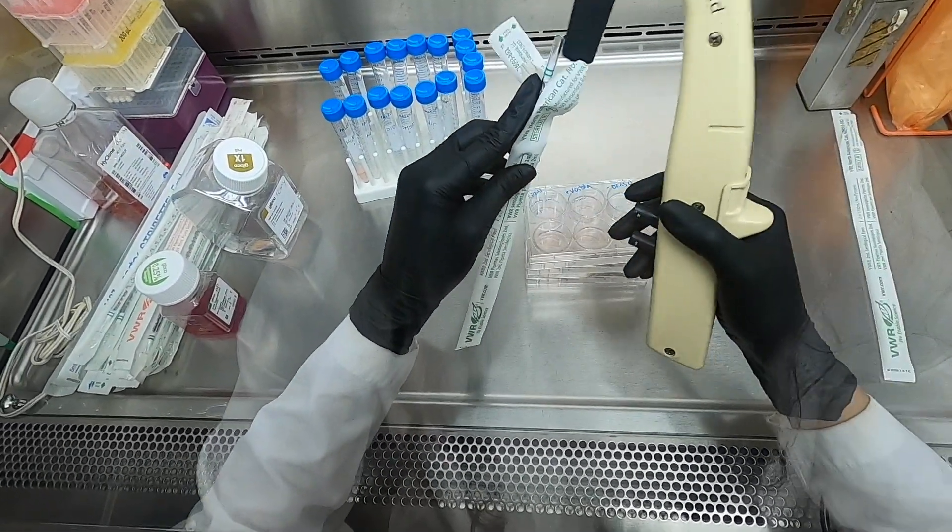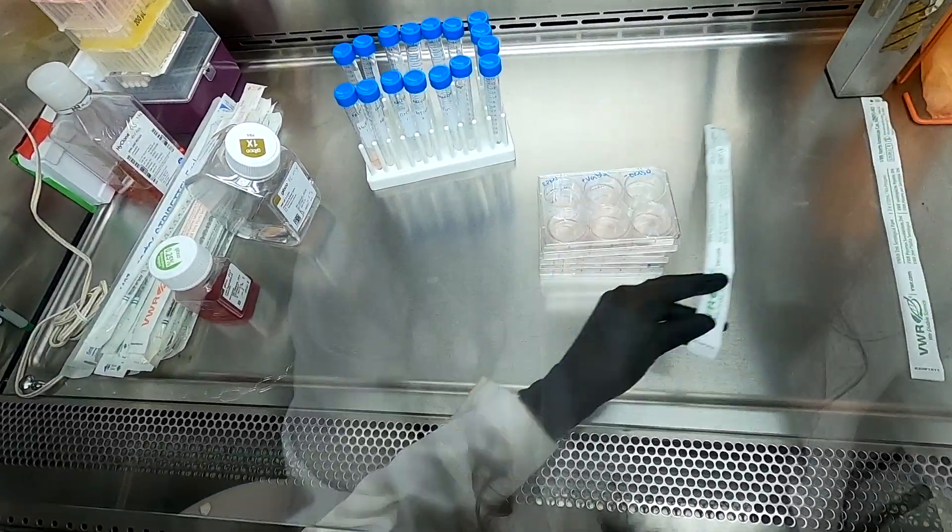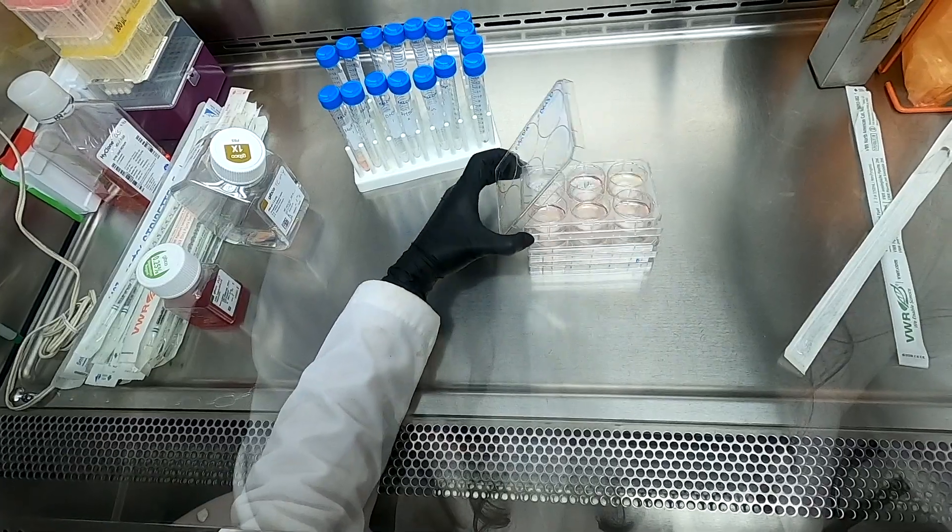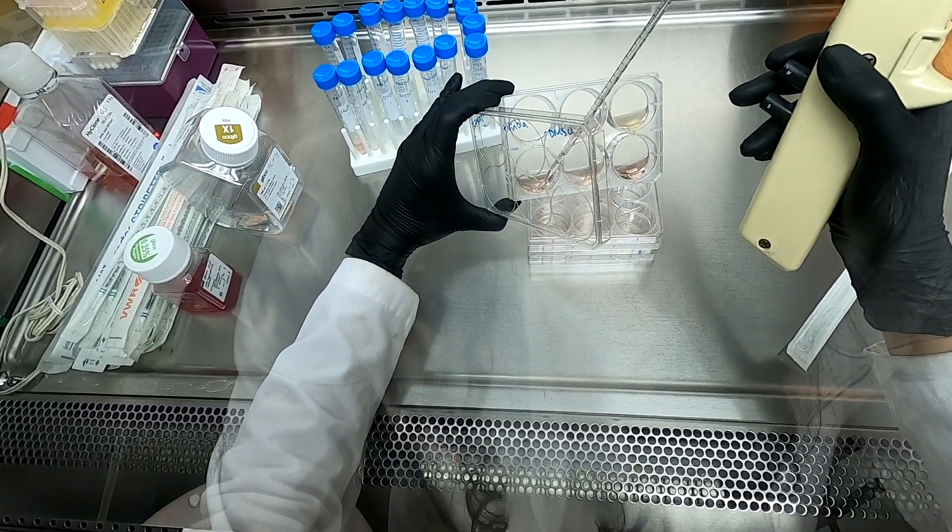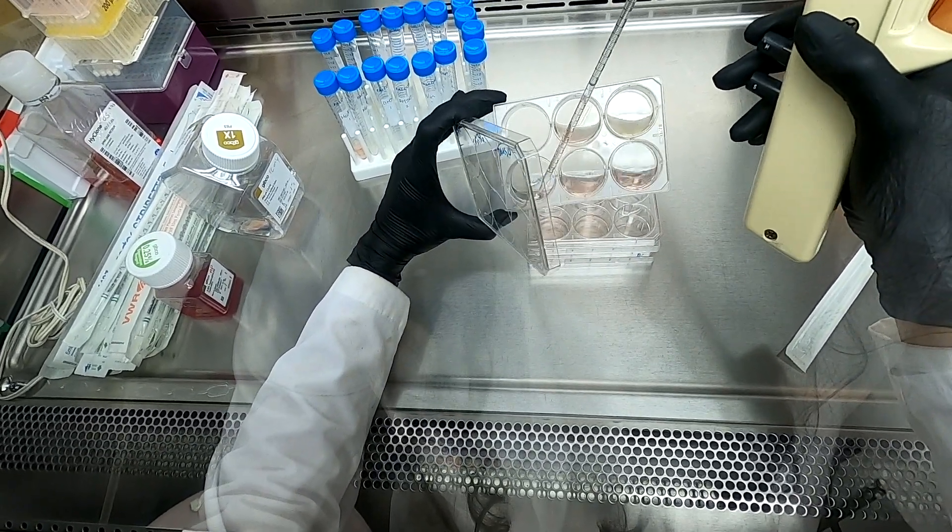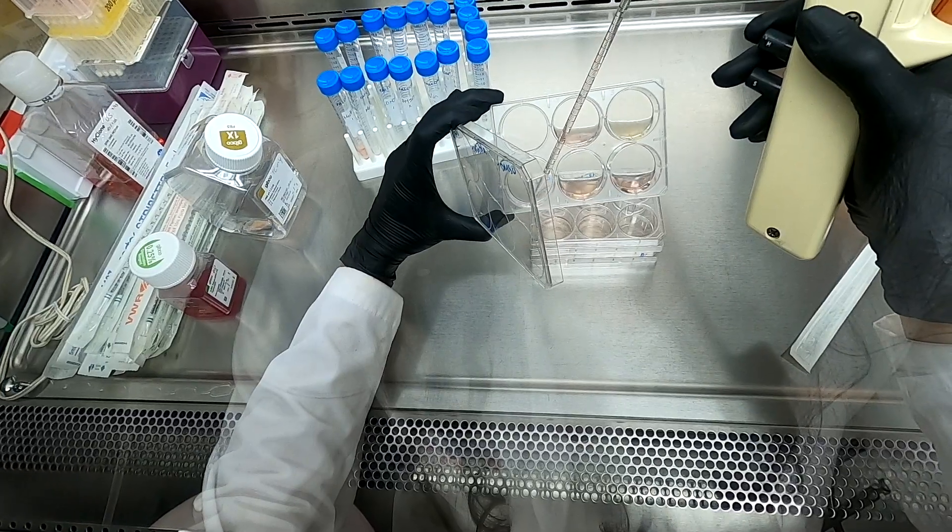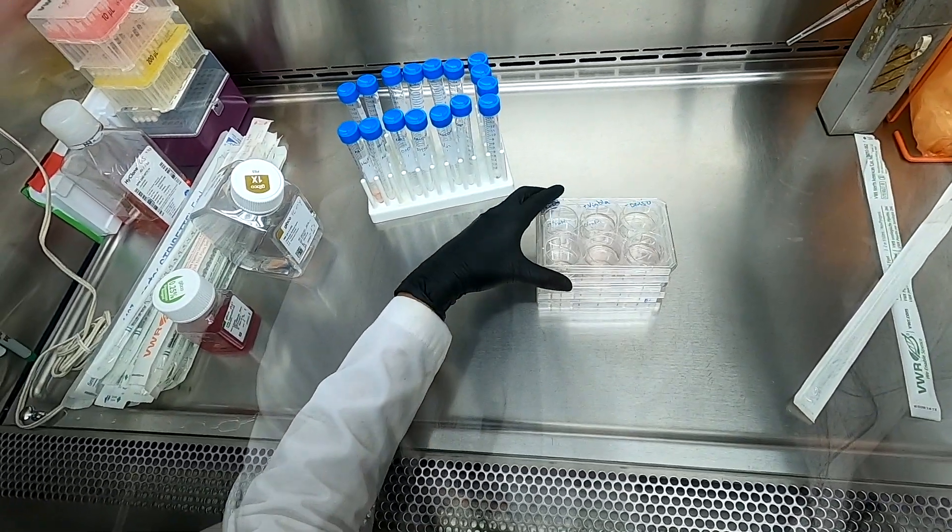First, we begin by aliquoting the supernatant from each of the wells into previously labeled 15 ml conical tubes. The reason for keeping the supernatant is to keep the floating cells, which are undergoing mitosis or may be dead after the treatment.